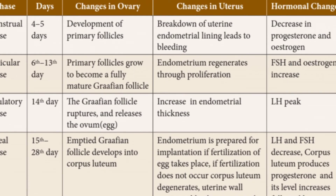The next phase is the follicular phase, occurring from day 6 to day 13. During this phase, primary follicles grow and mature into a fully mature Graafian follicle. In the uterus, the endometrium that degenerated and caused bleeding now proliferates and regenerates. The hormonal changes show FSH and estrogen increasing.